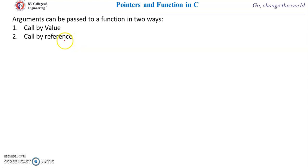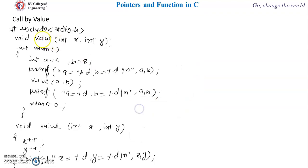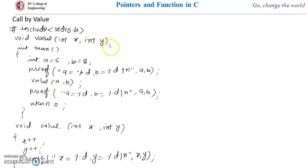Now let's discuss call by value. This is the example to demonstrate the call by value method. Here we have a program which will demonstrate how call by value works. We have given the name 'value' to the function and we are passing two parameters x and y. In the main function, this is the prototype, which is optional if we are writing the function definition before the main function. Since we are writing main function first, it is compulsory to write the prototype. The prototype requires the return type, name of the function, and then the arguments.